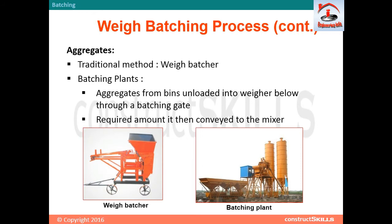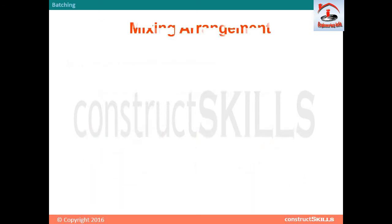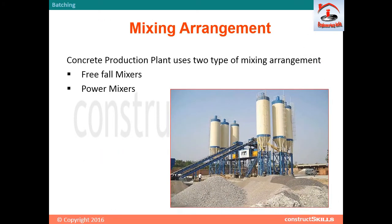For aggregates, in traditional weight batching plants, aggregates from bins are unloaded into a weigh hopper below through a batching gate as required on demand, then conveyed to the mixer. Concrete production plants use two types of mixing arrangements: free fall mixers and power mixers.